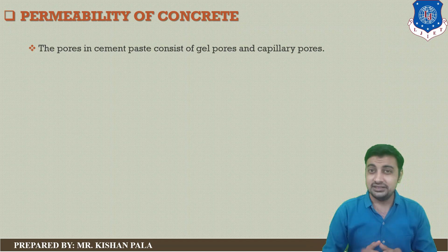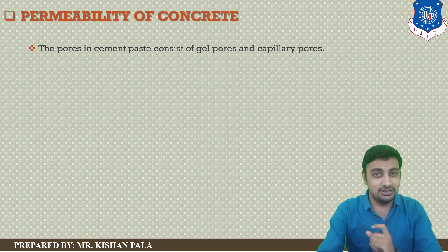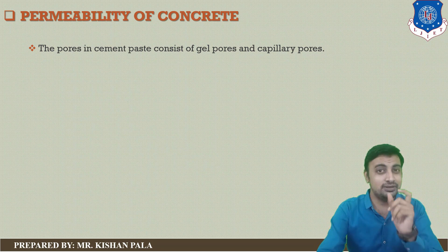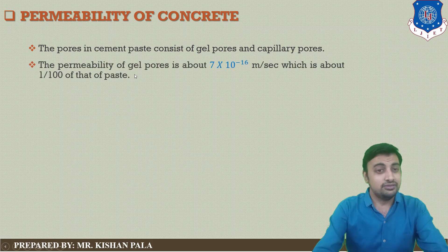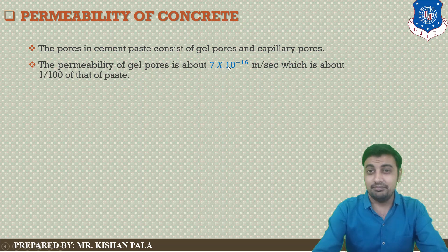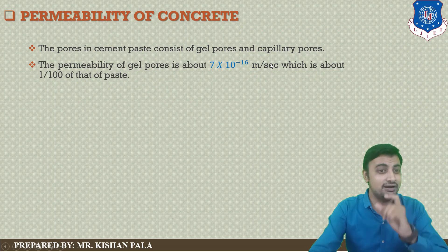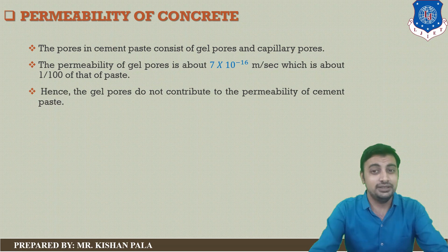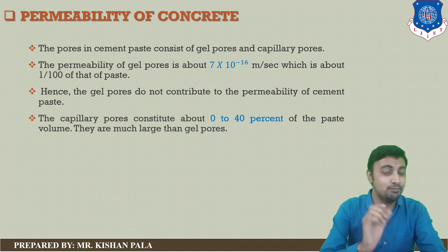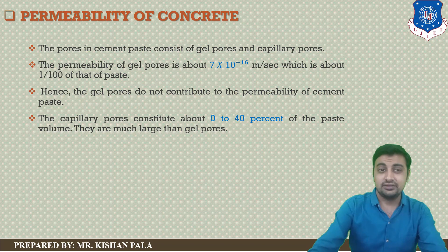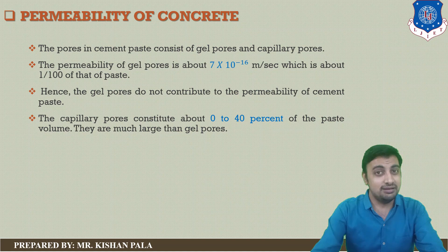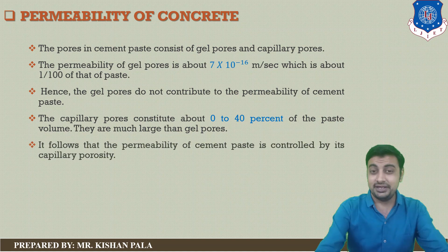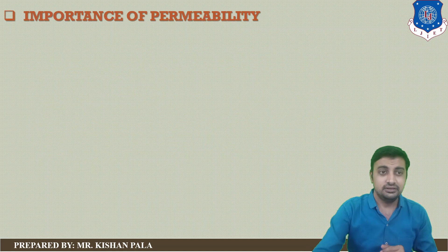The pores in the cement paste include gel pores and capillary pores. The permeability of gel is about 7 × 10⁻¹⁶ meters per second, which is about one-hundredth of the paste. Hence, gel pores do not contribute to the permeability of the cement paste. Capillary pores occupy about 0 to 40% of the paste volume and are much larger than gel pores. Therefore, the permeability of cement paste is controlled by its capillary porosity.